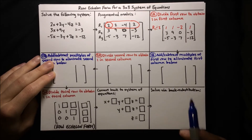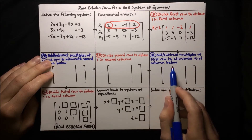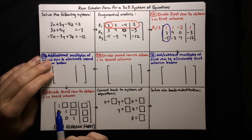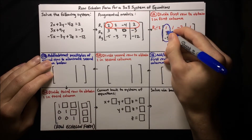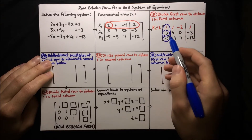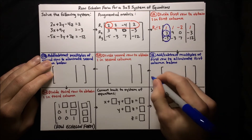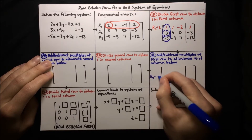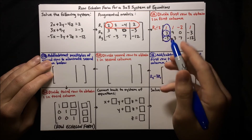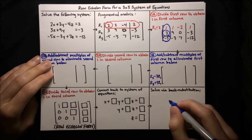Our next step is to add or subtract multiples of the first row to eliminate the first column below. We need to eliminate the 3 and the negative 5 and turn them both into zeros. To eliminate the 3, we subtract 3 times the first row, so row 2 becomes R2 minus 3 times R1. To eliminate the negative 5, we add 5 times the first row, so row 3 becomes R3 plus 5 times R1.